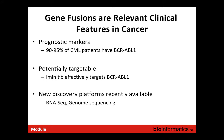Gene fusions are very relevant to the clinical features of some cancers. The best example is the BCR-ABL1 fusion — one of the first somatic events to be discovered, originally found through cytogenetics when the Philadelphia chromosome translocation was identified. It's now held up as an example of how targeted therapies can work, because a small molecule inhibitor of the BCR-ABL1 fusion product was created. That drug is called Imatinib, and it's very effective for treating CML patients.